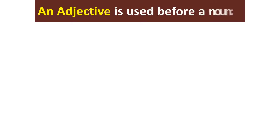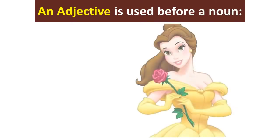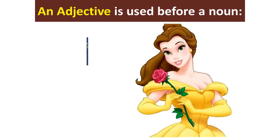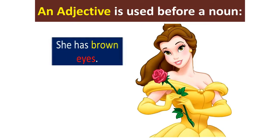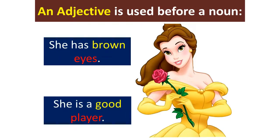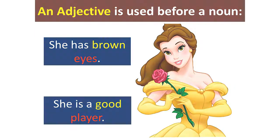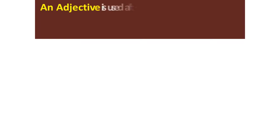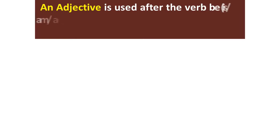An adjective is used before a noun. For example: She has brown eyes. She is a good player. An adjective is also used after the verb 'be' — meaning is, am, are, was, were.